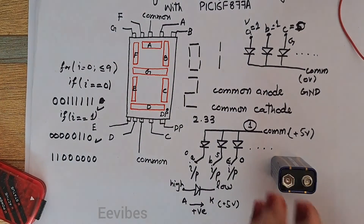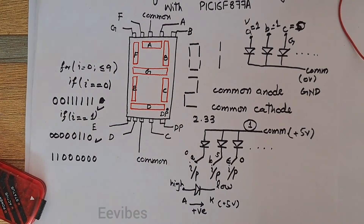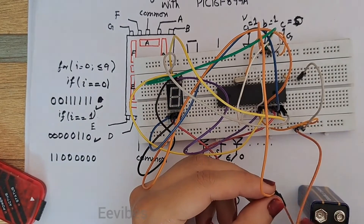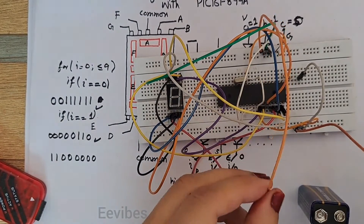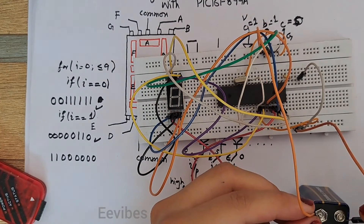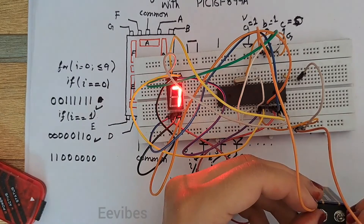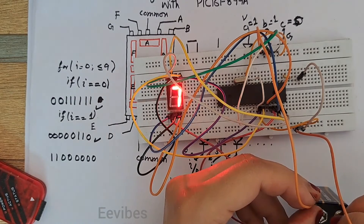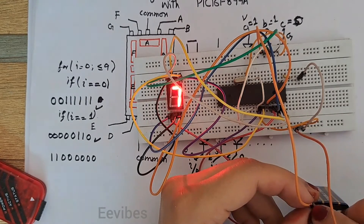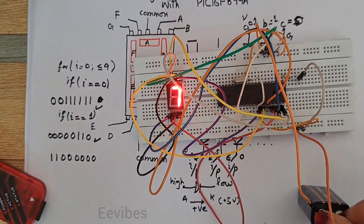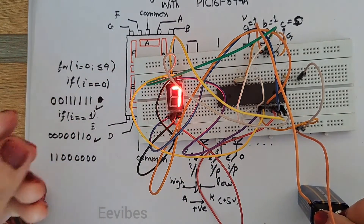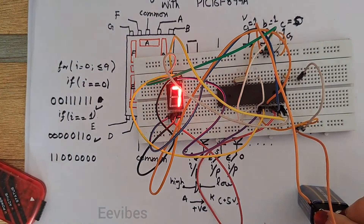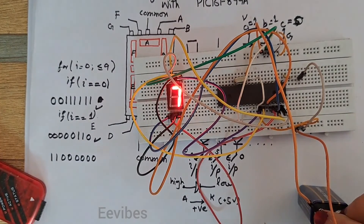I have already written the code. Let's connect the circuitry — since this is a common cathode type, I connect accordingly. You can see the counter values being displayed starting from zero to nine. You can control the display duration by adjusting the delay routines in the program. If you have questions, drop them in the comment section and don't forget to like and subscribe. Thank you for watching.